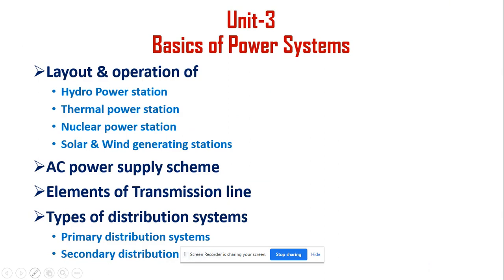Hi students, today we will discuss the basics of power systems, which is our third unit in our BEEE course — Basics of Electrical and Electronics Engineering. These are the contents of this chapter. The chapter begins with the layout and operation of various power stations: hydro power station, thermal power station, nuclear power station, solar and wind generating stations. After that, AC power supply schemes, elements of transmission lines, and types of distribution systems. In this video lecture, I will explain about the hydro power station.